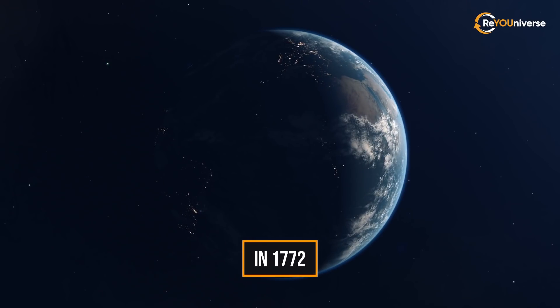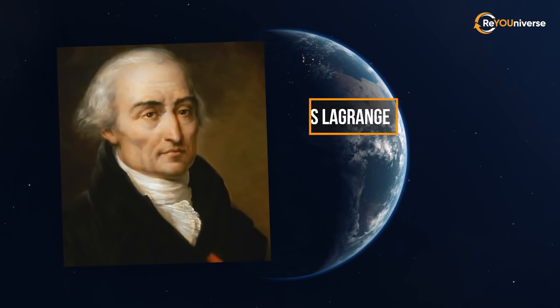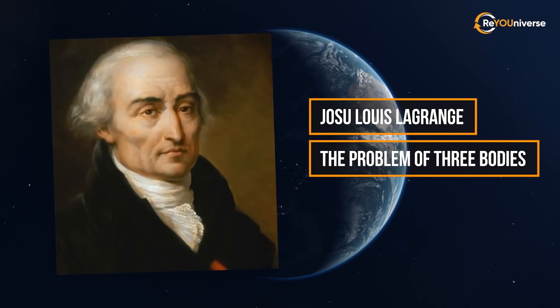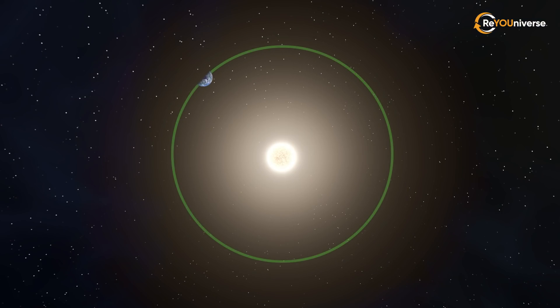In 1772, mathematician Josue Louis Lagrange calculated in his study, The Problem of Three Bodies, that the Earth's gravitational field should neutralize the gravitational pull of the largest object in the solar system, the Sun, in five regions of space.